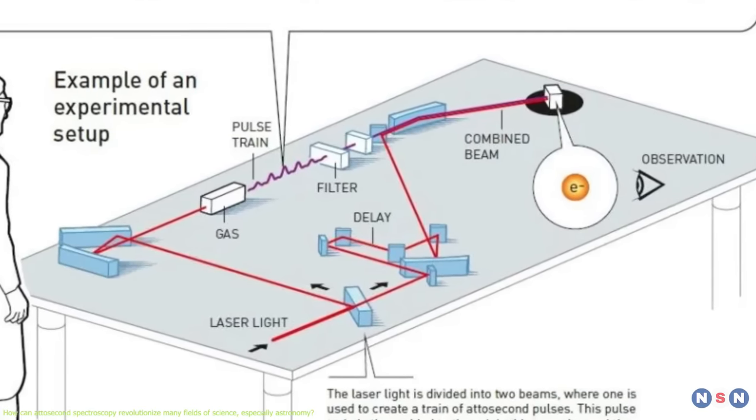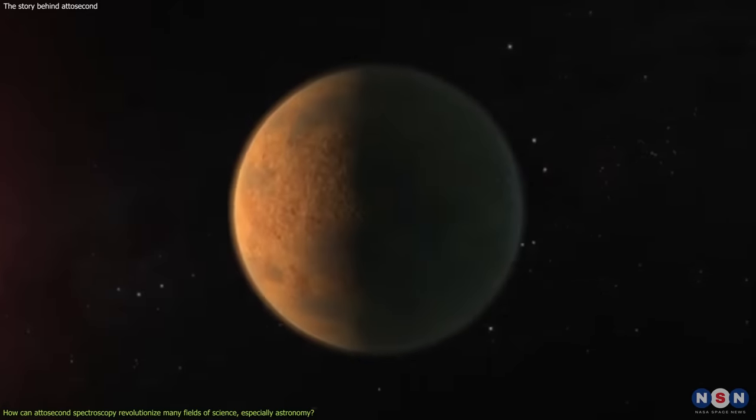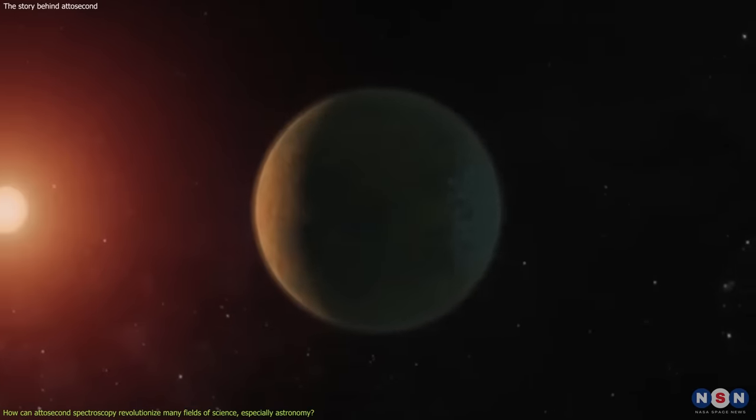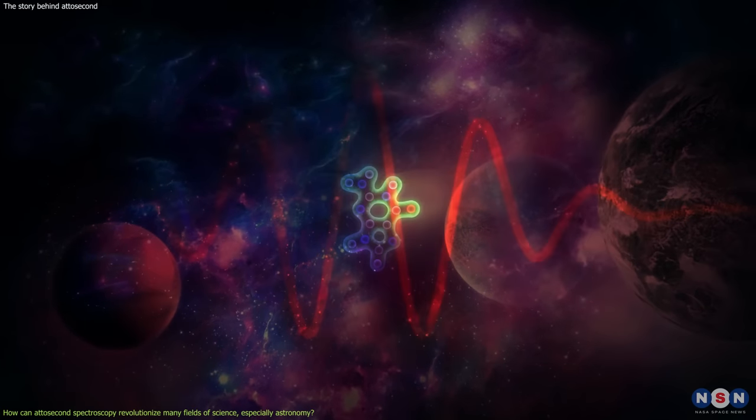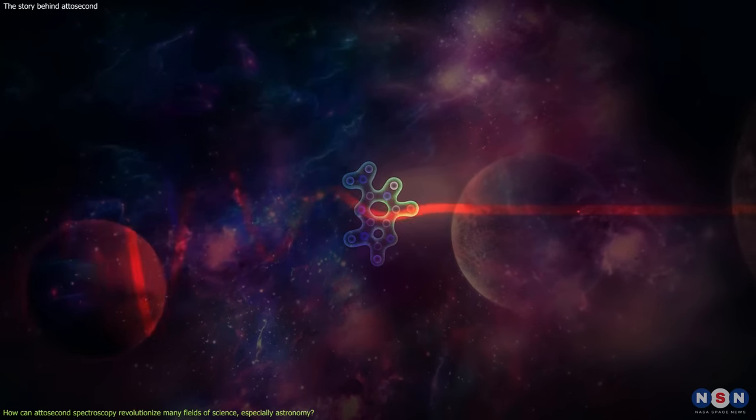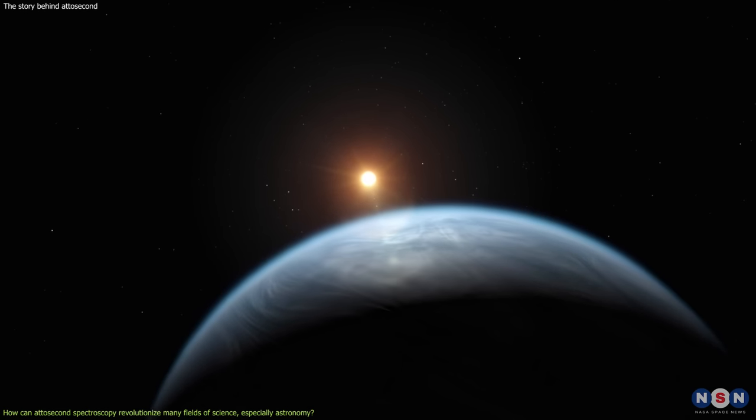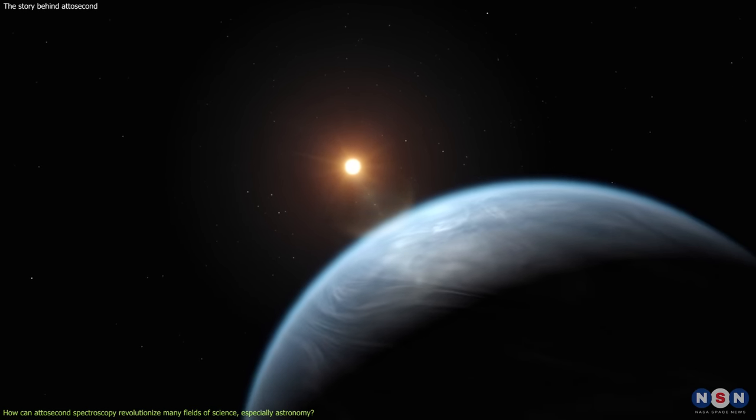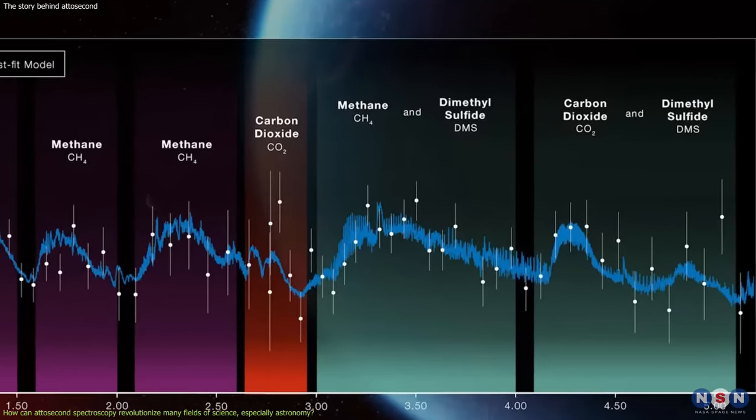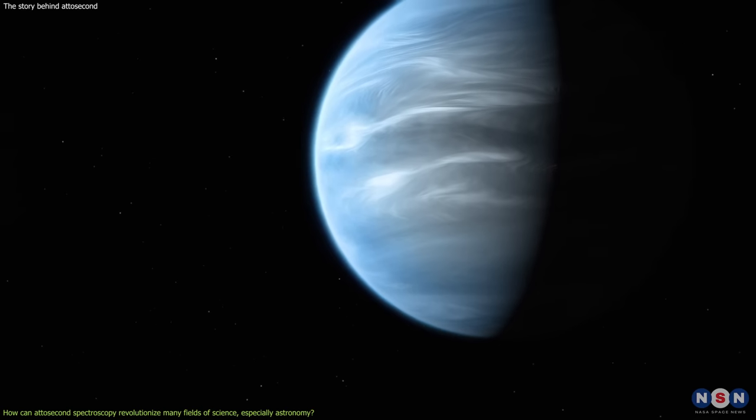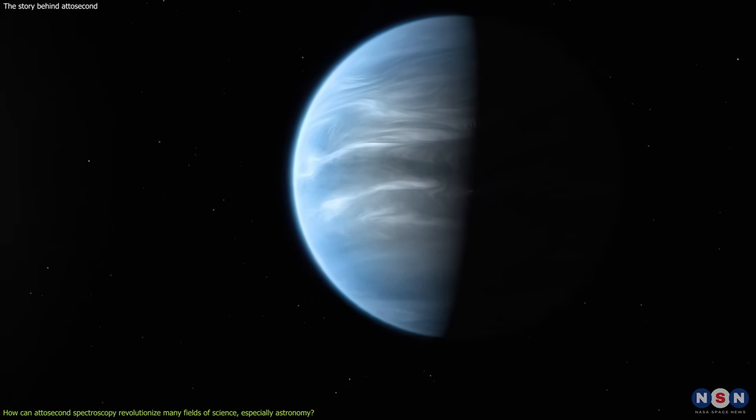Attosecond spectroscopy can help us detect and characterize exoplanets, which are planets that orbit stars other than our sun. By using attosecond pulses of light to analyze their atmospheres and biosignatures, we can determine their habitability and potential for life. By measuring the absorption or emission of these molecules by exoplanets using attosecond pulses of light, we can infer their presence or absence on their surfaces.